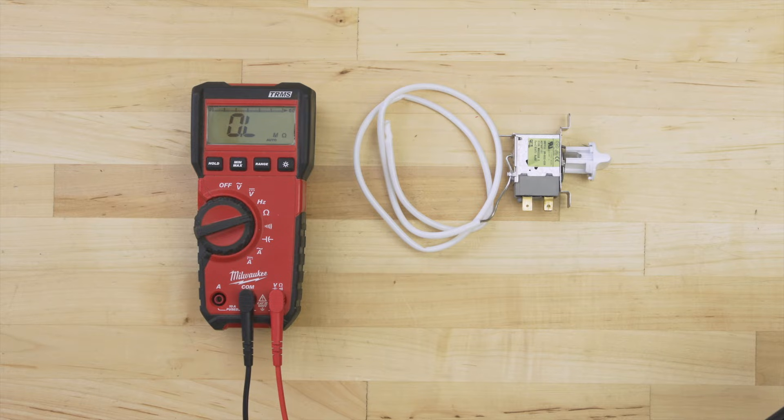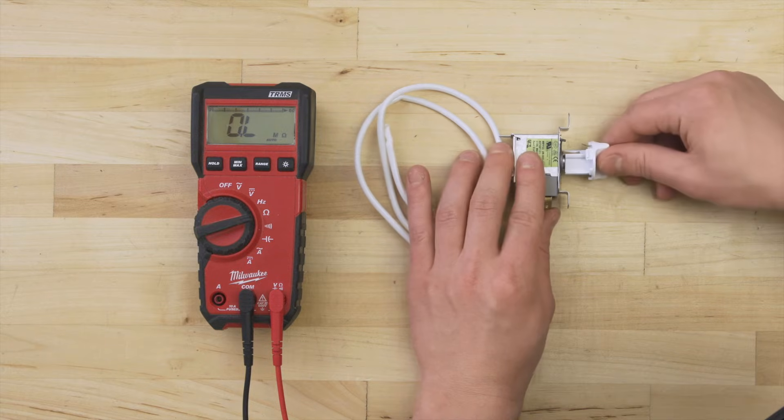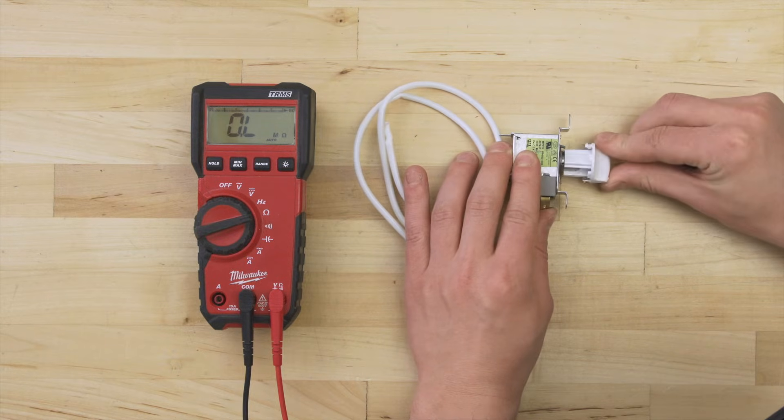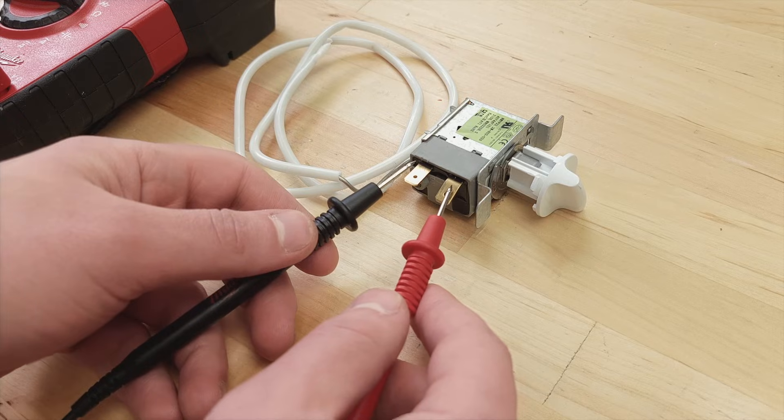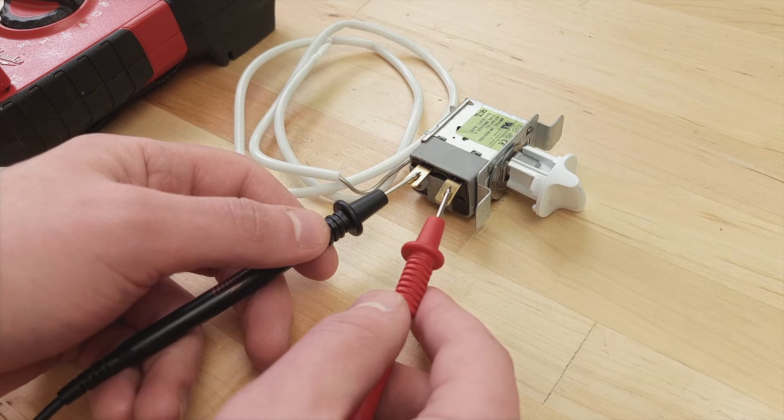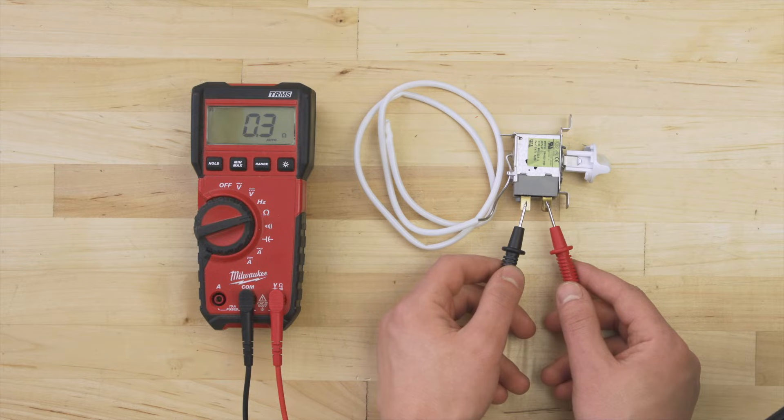Set the multimeter to the ohms or resistance setting. With the dial turned to any cold setting, test between both terminals. You should get a continuity reading between 0 and 1 ohm at room temperature.